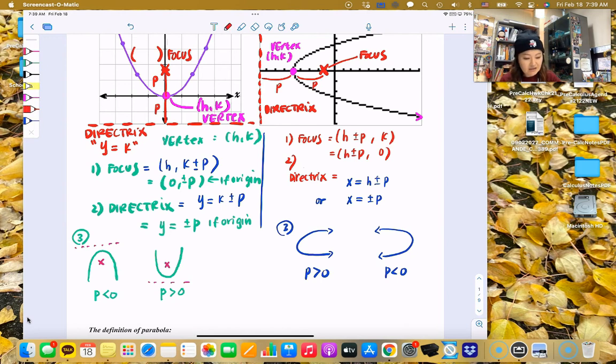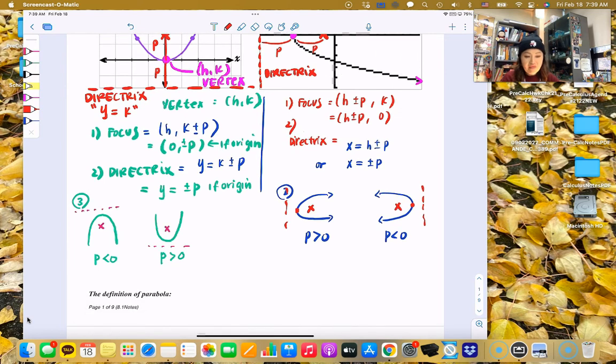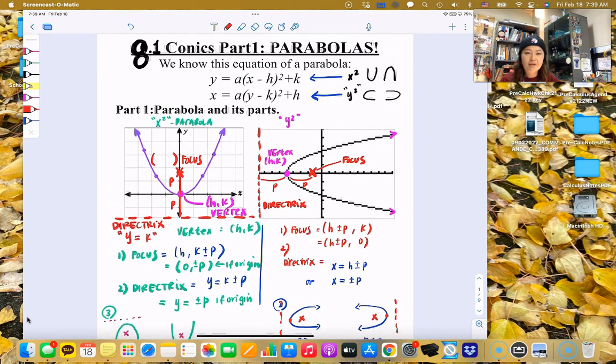So obviously this one is when p is negative and this is when p is greater than zero. And let's do the belly button and the belly button vertex. And you have your directrix right behind it, always behind the vertex of your directrix.